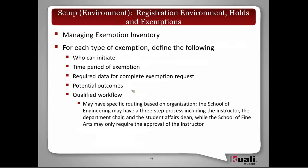For each type of exemption, the definition requires: who can initiate the exemption, the time period of the exemption, and the required data for the complete exemption request — which will be a forward-looking feature when workflow is built in. There are also potential outcomes and a qualified workflow, meaning it may have specific routing based on particular organizations. Engineering, for example, may have a more involved process for certain exemptions, while smaller schools may require a very simplified approval process.